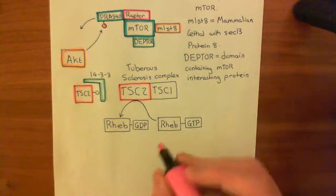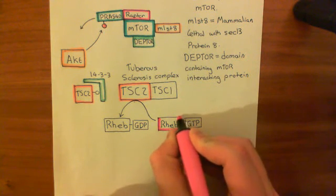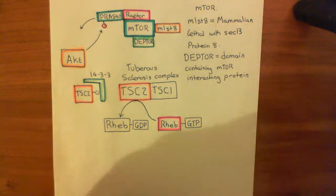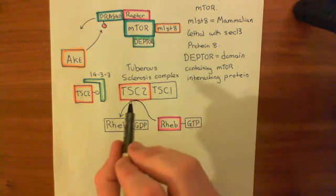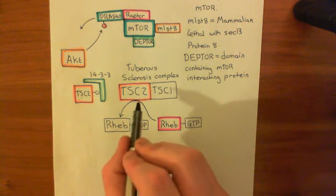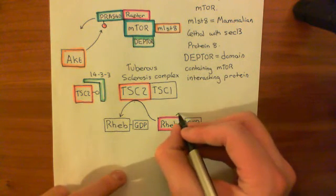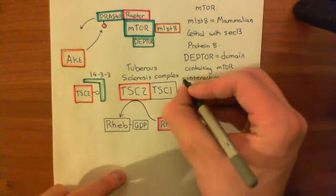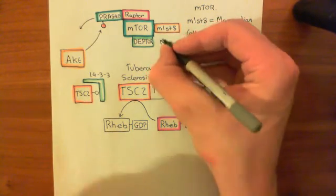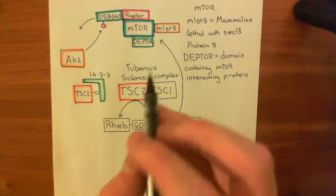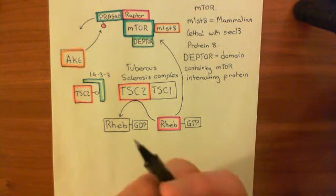What's going to happen is REB-GTP is going to go up within the cell. REB is not having its GTP hydrolyzed anymore because TSC2 is inactive now, and then REB-GTP, by unknown mechanisms, activates mTORC1, the mammalian target of rapamycin complex 1.